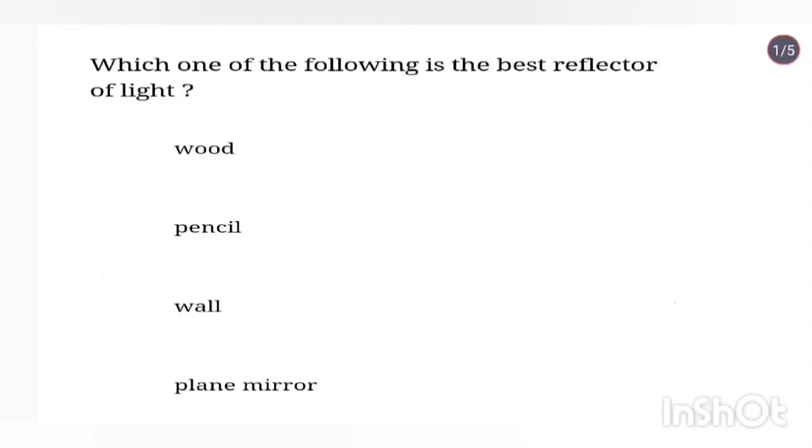Which one of the following is the best reflector of light? Plane mirror. Wood, pencil, and wall have rough and opaque surfaces which cause light waves to scatter and hence are poor reflectors of light. Plane mirror has a polished and shiny surface and reflects light, with all reflected rays traveling in the same direction. So plane mirror is the best reflector of light.